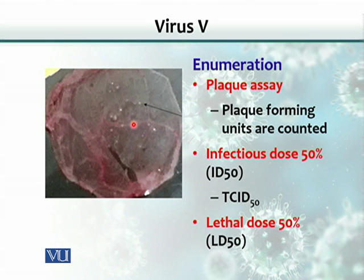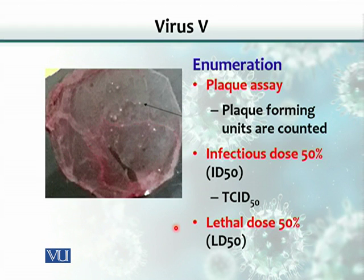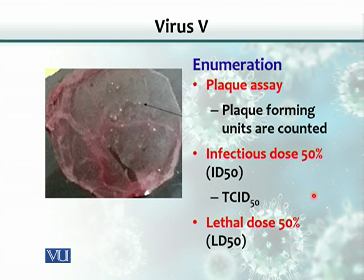If we know the dilution used for inoculating the hen egg, we can multiply by that dilution factor to calculate how many virus particles per milliliter the original sample contains. Sometimes we are interested in finding the infectious dose 50 (ID50) — the dose or number of virus particles that would cause infection in 50% of a population of animals. To calculate ID50, we make tenfold serial dilutions, inoculate a few microliters of each dilution into a group of animals, and then study the presence of the virus to calculate the 50% dose.